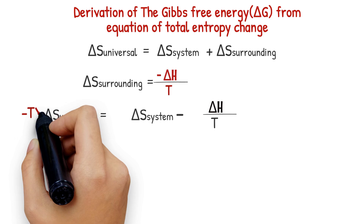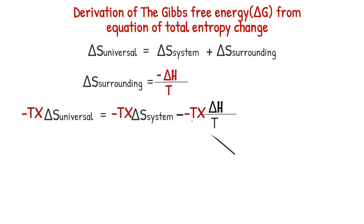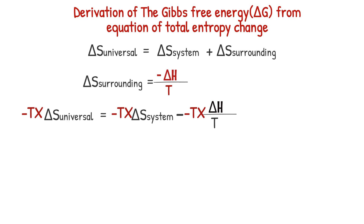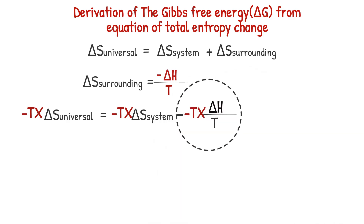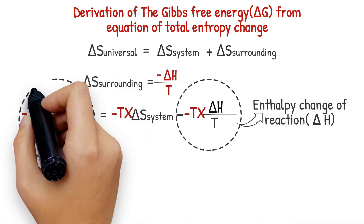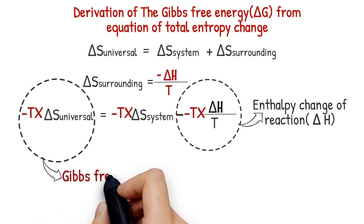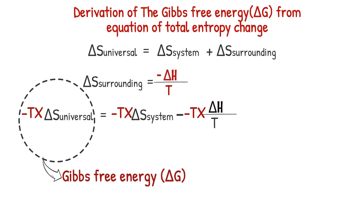You can make a simple rearrangement by multiplying both sides by negative temperature. This negative multiplied by this negative gives positive. Then you can simplify: temperature divided by temperature equals 1. This term equals the enthalpy of reaction, while this term equals free energy. The total entropy change multiplied by negative temperature is equal to free energy.